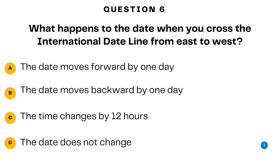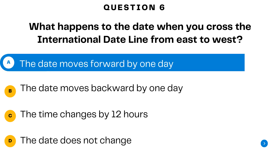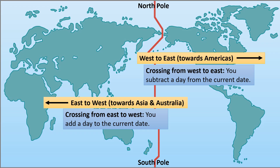Question number six. What happens to the date when you cross the international dateline from east to west? A. The date moves forward by one day. B. The date moves backward by one day. C. The time changes by 12 hours. Or D. The date does not change. The answer is A — the date moves forward by one day. When you cross the international dateline from east to west, you add a day to the current date, effectively moving forward in time by one day.